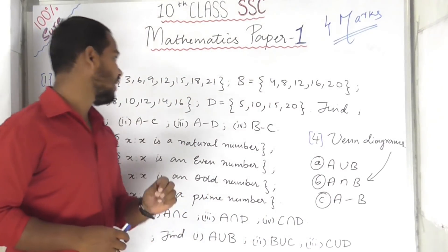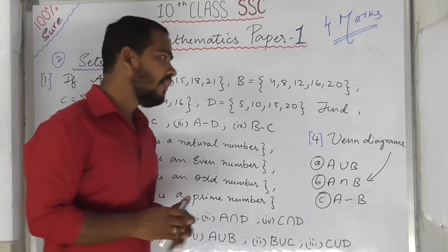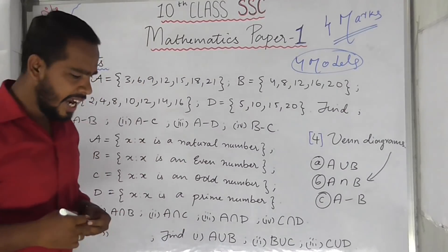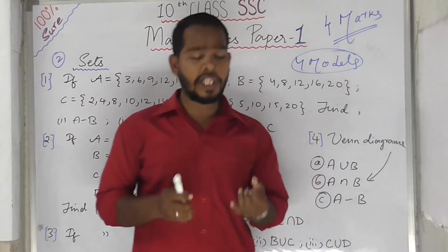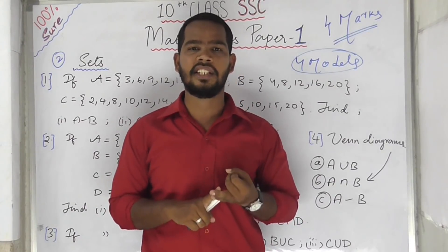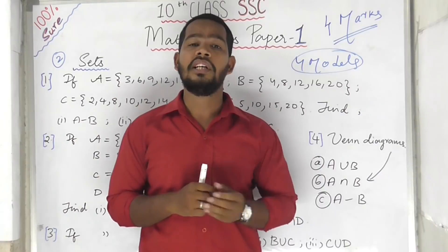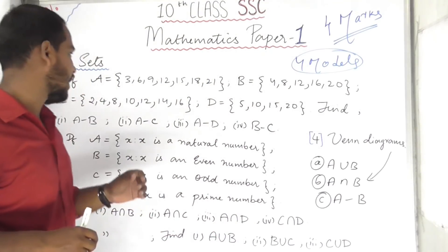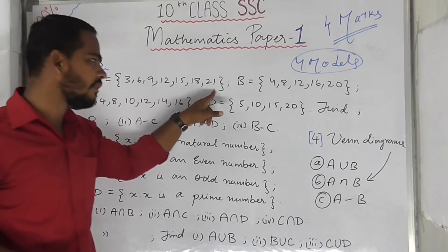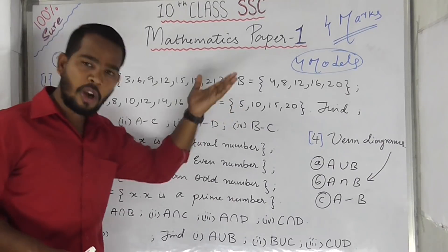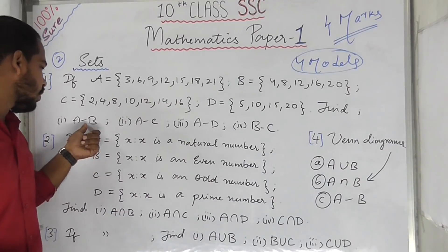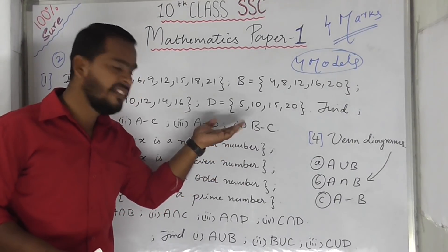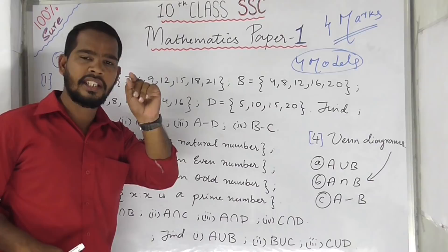The second chapter is sets. We have four models. The first model involves set difference (minus). Given sets A, B, C, D with some values, find A minus B, A minus C, A minus D, B minus C. You need to understand the union, intersection, and minus operations.